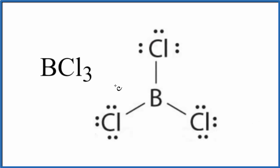In this video, we'll look at the molecular geometry for BCl₃. This is boron trichloride. So the first thing we need to do when we're looking at the molecular geometry, we need to have a Lewis structure. If you need help, there's a link in the description how to draw the Lewis structure for BCl₃.